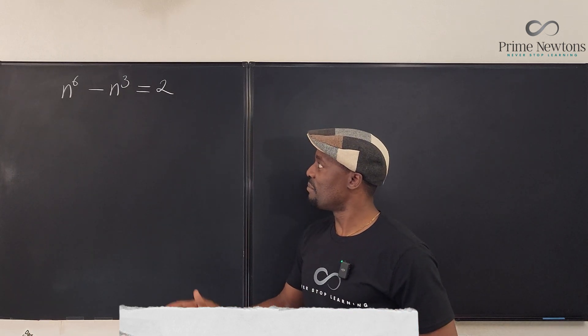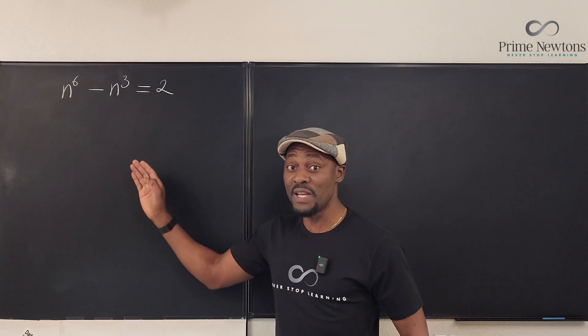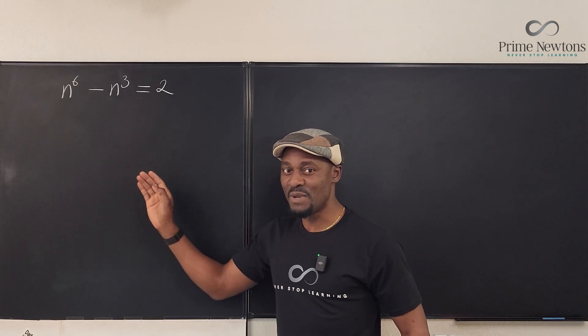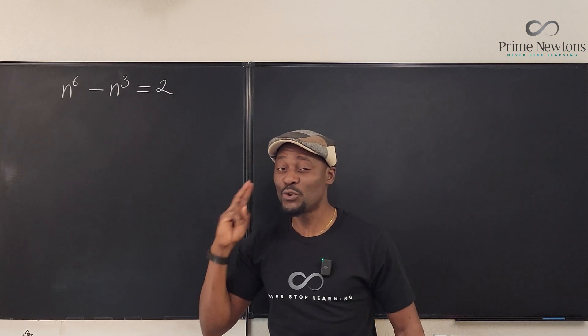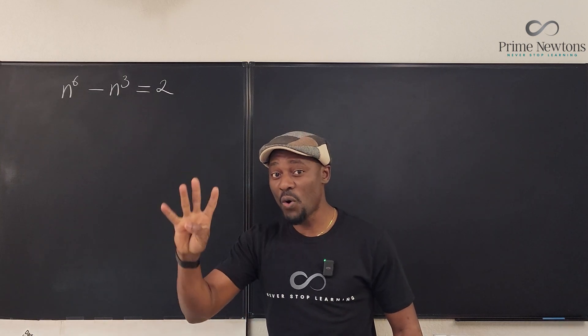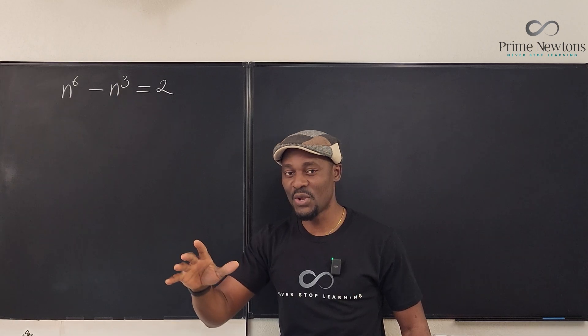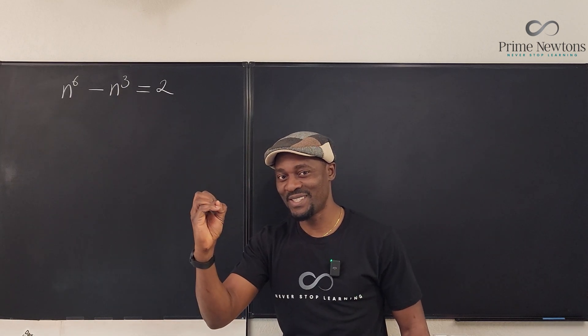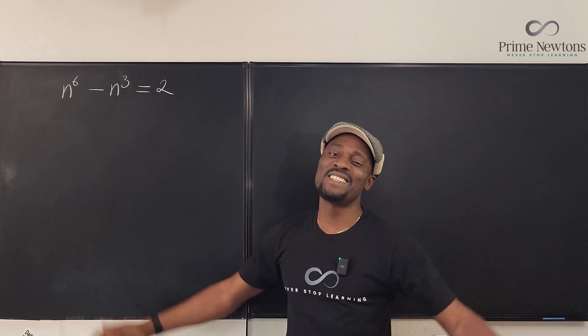So, it is either you have all of them, because you must have 6. It's either all 6 of them are complex, or 4 of them are complex, or 2 of them are complex, or 0 of them are complex. But you cannot have an odd number of complex. And if it is not complex, it is real. Let's get into it.